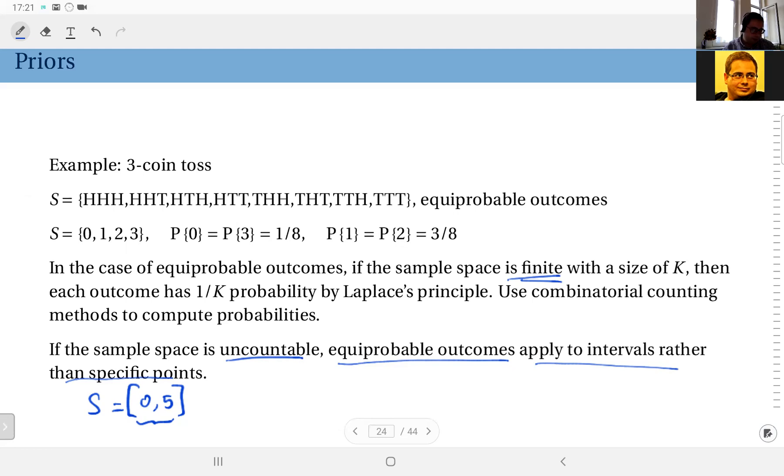In fact, it's going to be the basic distinction between discrete random variables and continuous random variables when we study them. And in this case, the assumption of equiprobable outcomes is going to apply to intervals. So this is the sample space. And in this case, the probability of the sample space will be 1. So using a very simple metric, the length of this interval is 5.